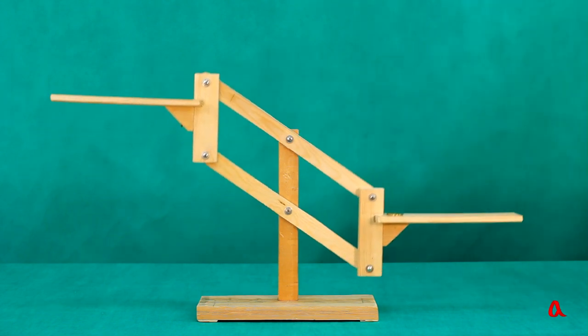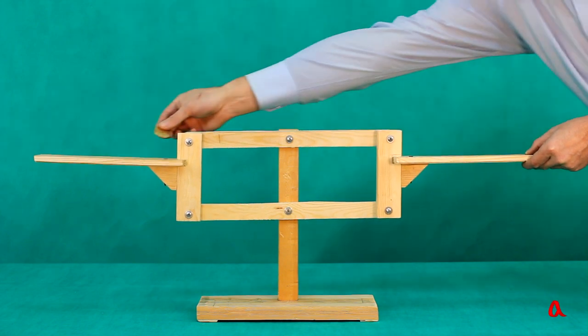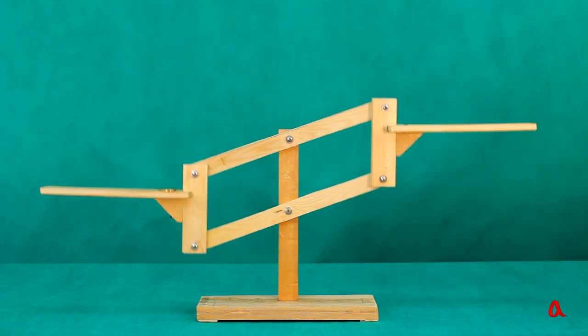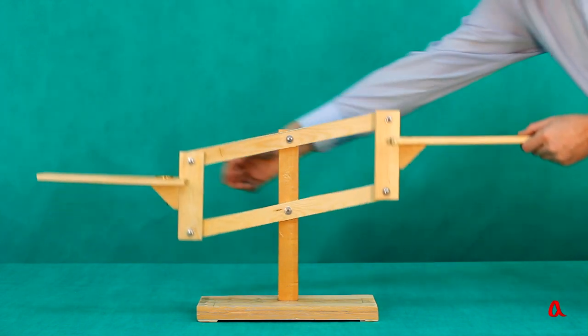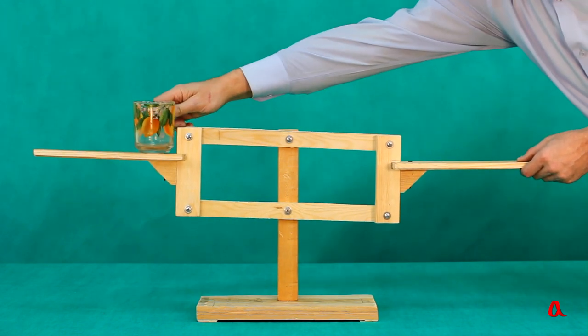The load of 20 grams upsets its equilibrium. If we place two identical loads on the platforms, they equilibrate each other.